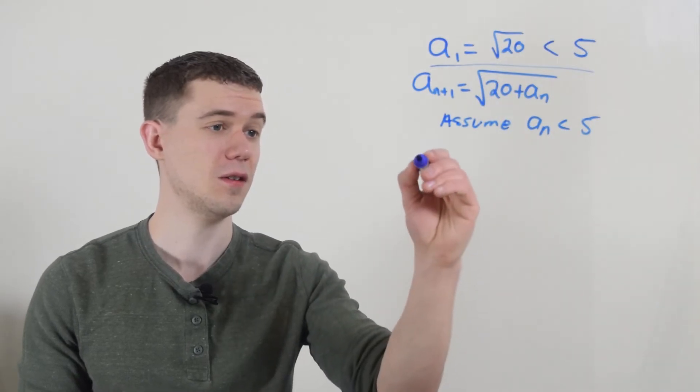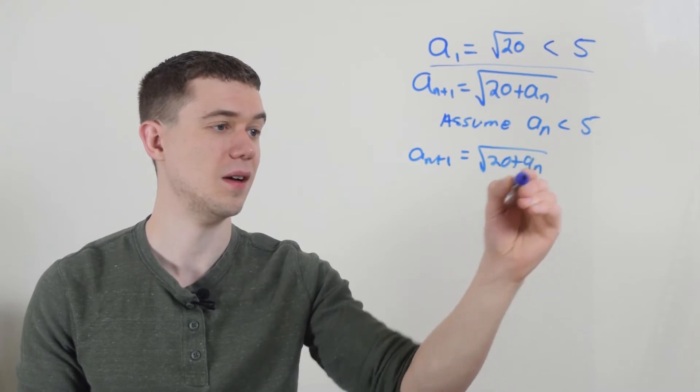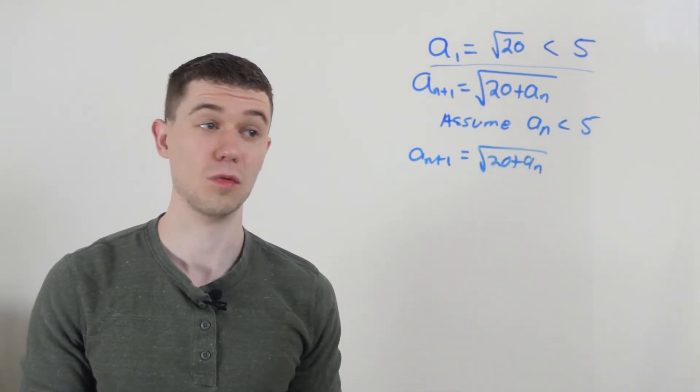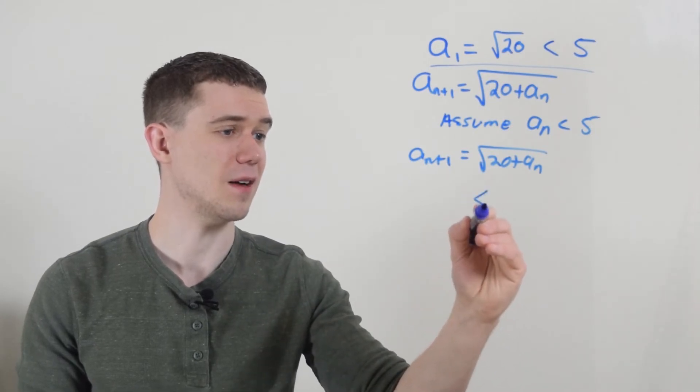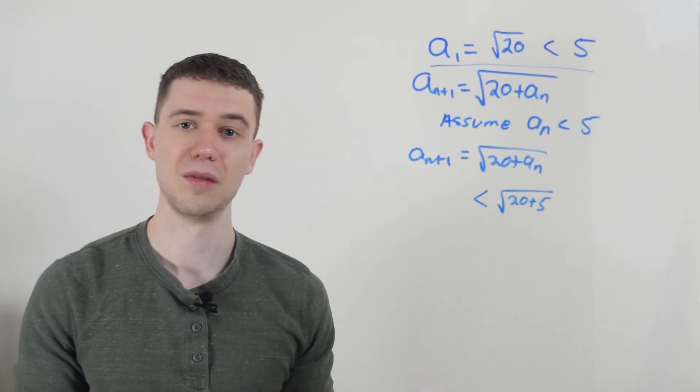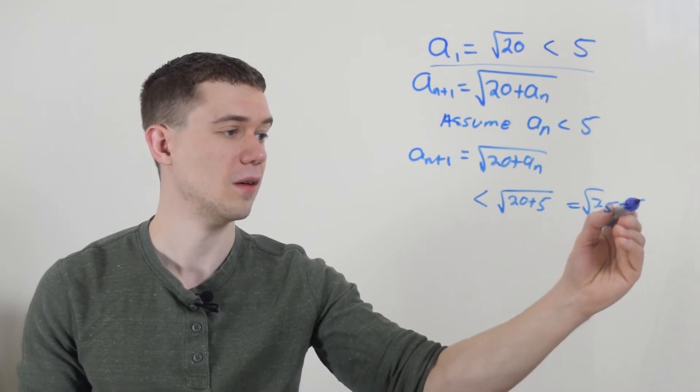Well, here's the a_{n+1} term, I know that that's equal to 20 plus a_n square rooted. And my assumption is that a_n is less than five. So this is less than square root of 20 plus five, right, if I just replace the a_n with five. Well, this would just be root 25, which is five.